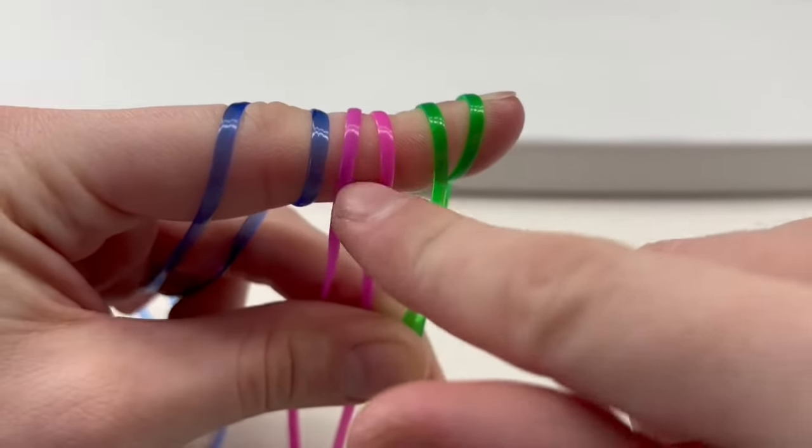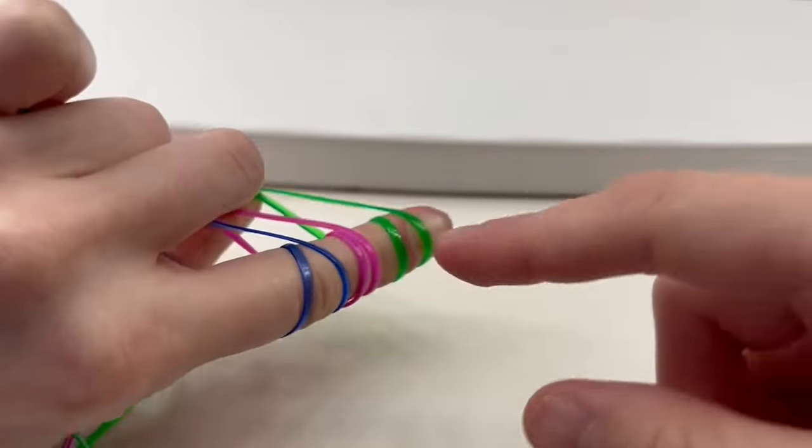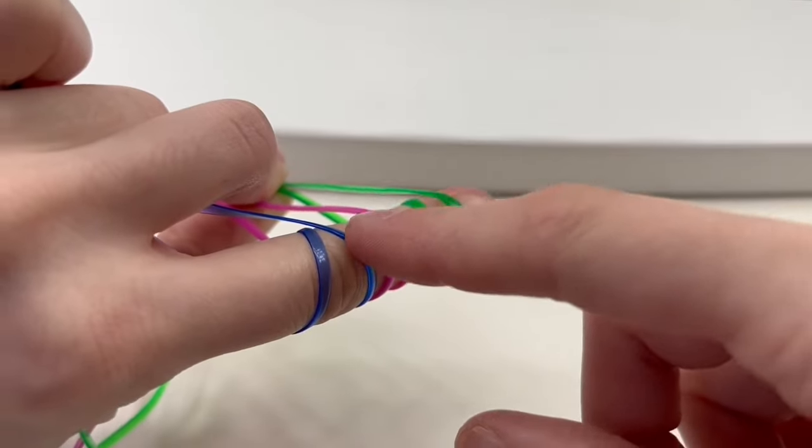On your finger you should have tail loop, tail loop, tail loop in the front and the back. Same tail loop, tail loop, tail loop.